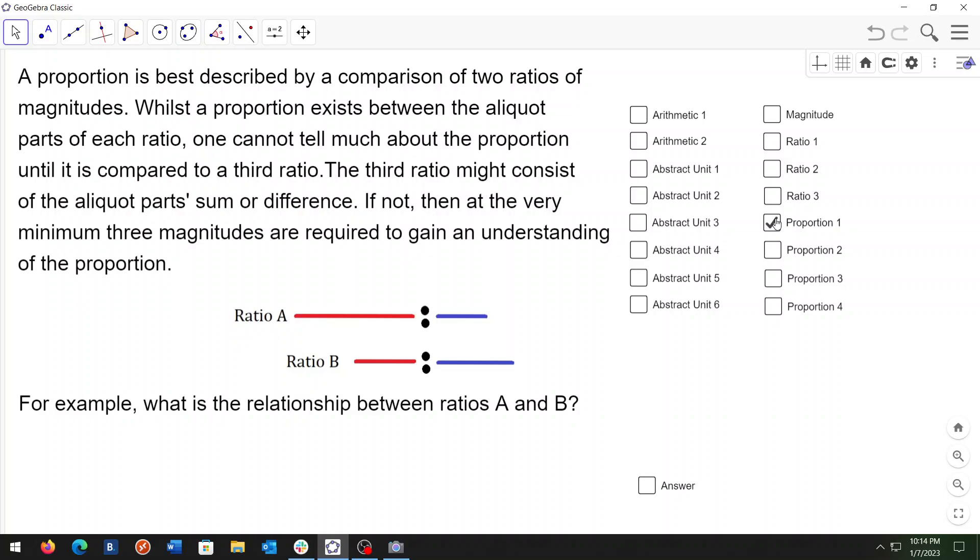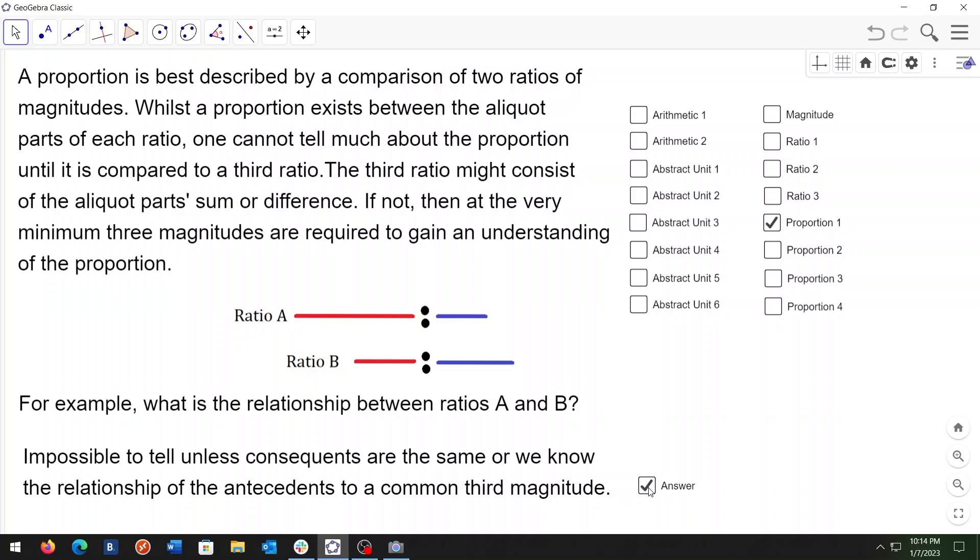For example, what is the relationship between ratios A and B? Give you a moment to think about that. Here's the answer. Impossible to tell unless the consequents are the same or we know the relationship of the antecedents to a common third magnitude.